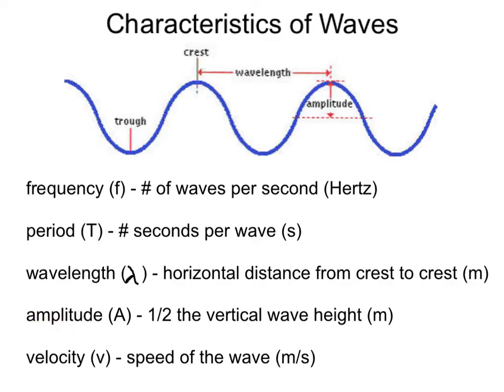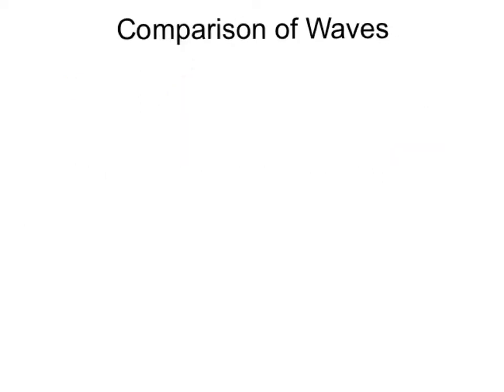The amplitude, represented by the capital letter A, is half the vertical wave height, measured in meters. So here we can see the full wave height, but half of that wave height is the amplitude. And lastly, every wave has a velocity, or speed of the wave, measured in meters per second. We can look at the characteristics of waves to tell them apart.